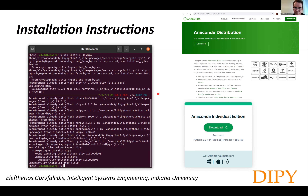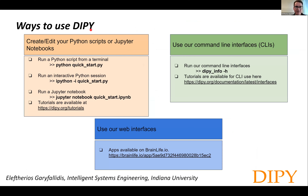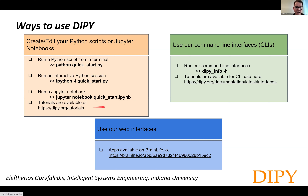Here are some ways to use DIPY. One way is to create or edit Python scripts or Jupyter Notebooks. For example, you could run a Python script from a terminal — here is running a quick-start tutorial available on the DIPY tutorials page. You can run it with just Python, IPython, or as a Jupyter Notebook. You can go to the tutorials, scan them, see which ones you like, and edit them with your own data. That's what most people have been doing using DIPY.